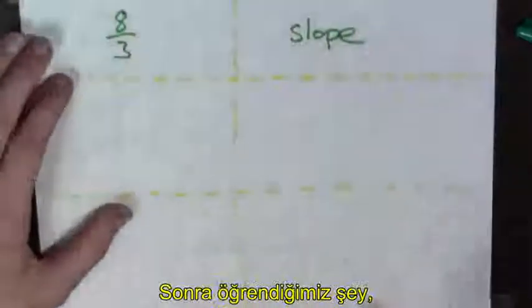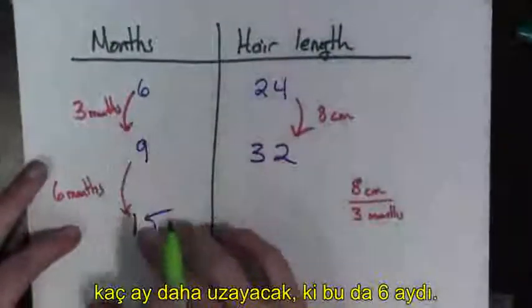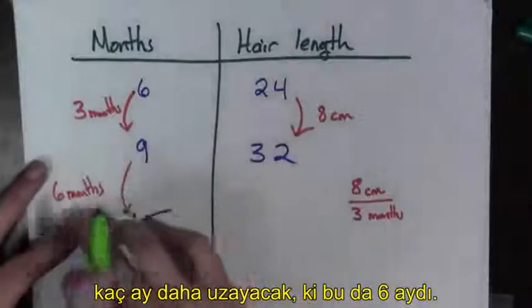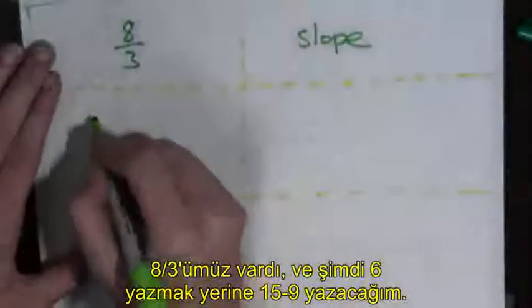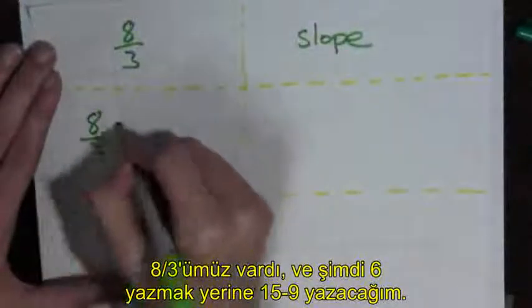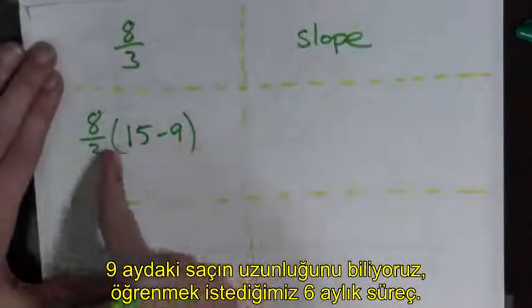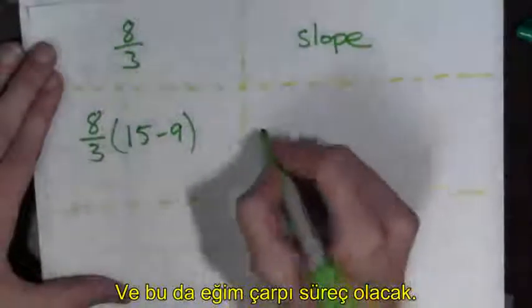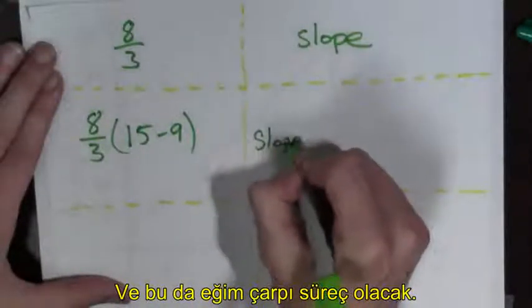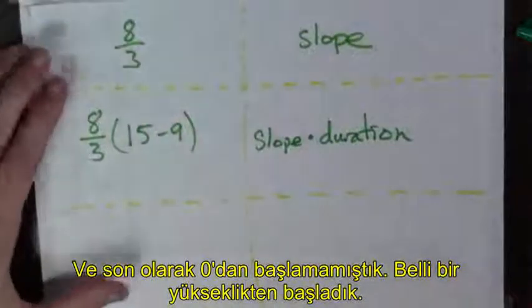The next thing we did was we figured out how long the hair was growing for. In our case, it was six months. So, we had eight over three. And I'm going to write it like this: 15 minus nine. This is where we got our six months because we're looking for 15 months. We know nine months. So, the duration, the growth along this time was six months. And so, this would be slope times duration.